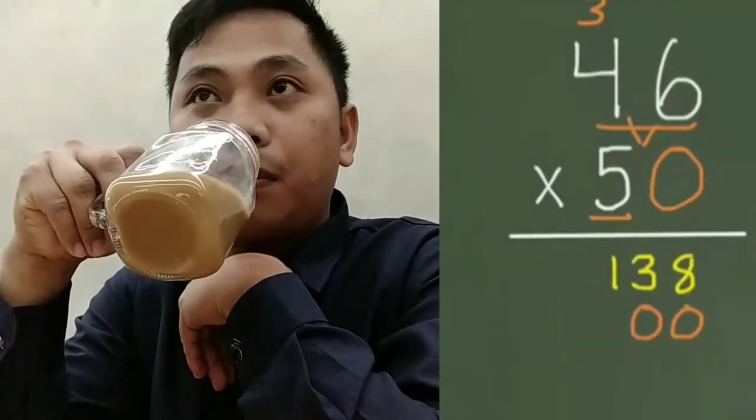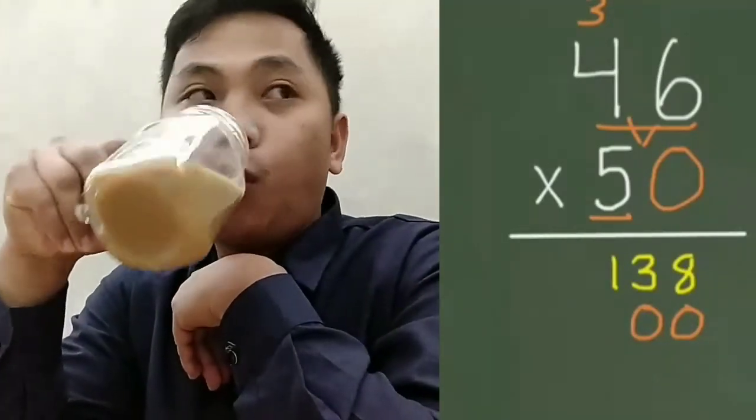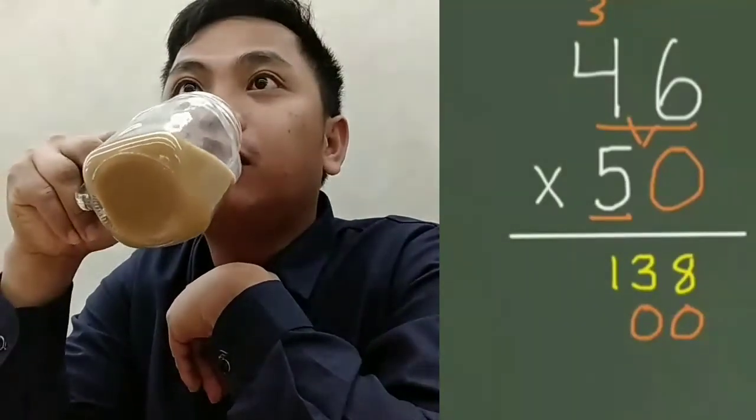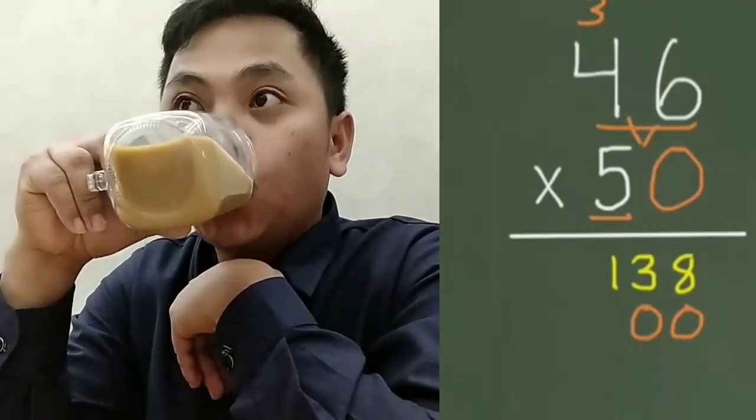Now 5 times 4 equals 20, plus our 3 extra, gives us 23.